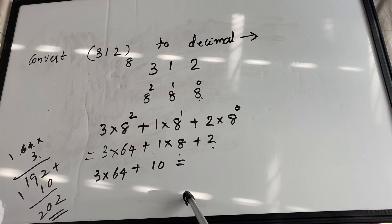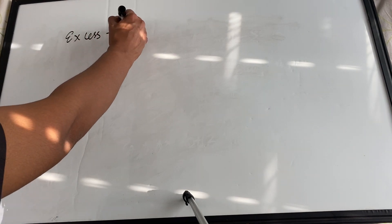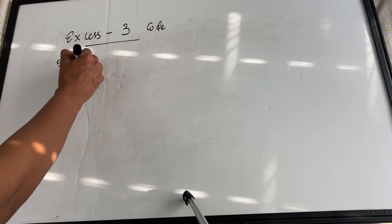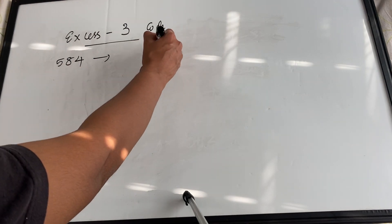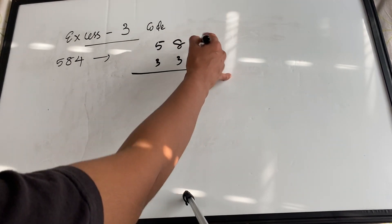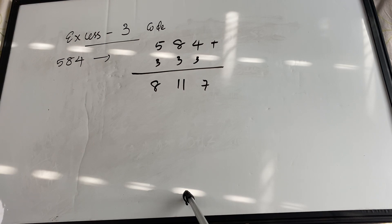Now let's talk about Excess-3 code. If you are given the number 584 and asked to find its Excess-3 code, here are the steps. Excess-3 means adding 3 to every digit of the number. So for 584, adding 3 to each digit gives: 5+3=8, 8+3=11, 4+3=7, resulting in 8, 11, 7.